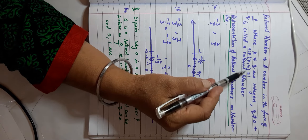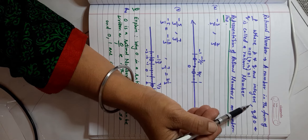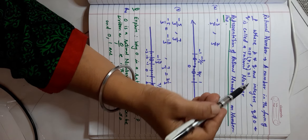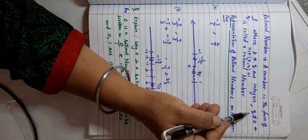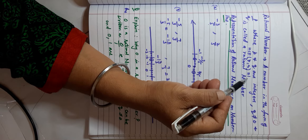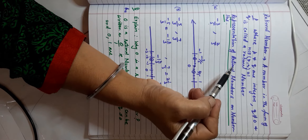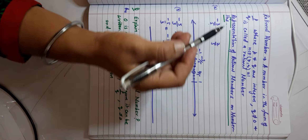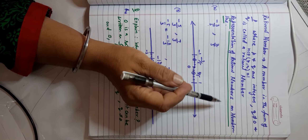Now let us define a rational number. A rational number is a number in the form p/q, where p and q are integers — meaning they can be positive or negative. p can also be 0, but q can never be 0. Also, the HCF of p and q should be 1, meaning there should be no common factor between p and q. These kinds of numbers are known as rational numbers.